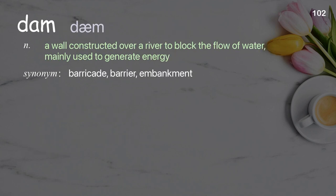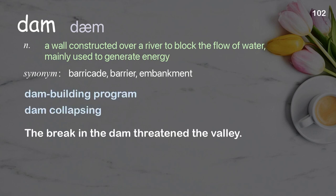Dam: a wall constructed over a river to block the flow of water, mainly used to generate energy. Examples: dam building program, dam collapsing. The break in the dam threatened the valley.